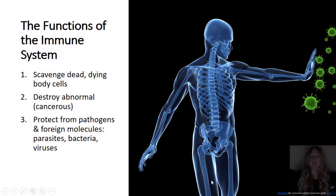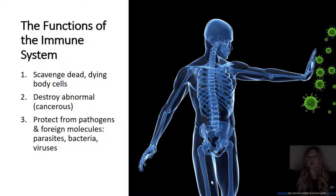Let's begin with the functions of the immune system. The functions of the immune system include to scavenge dead and dying body cells, to destroy abnormal or mutated cancerous cells, and to protect the body from pathogens and foreign molecules. This includes parasites, bacteria, and viruses.